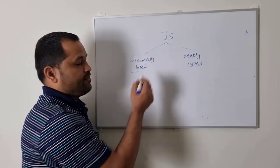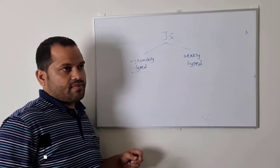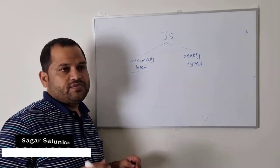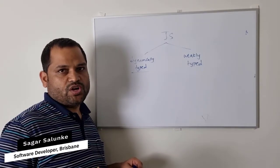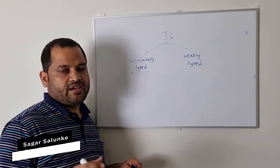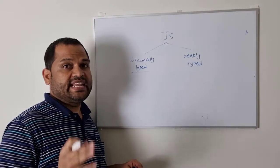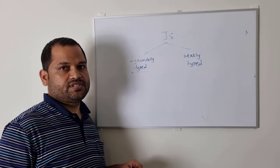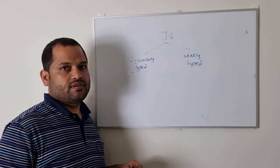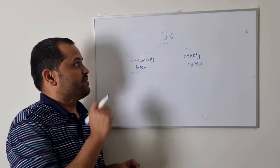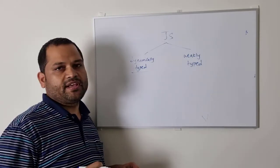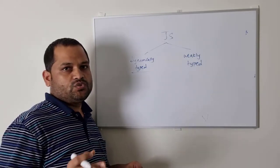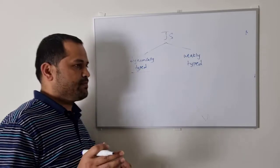Dynamically typed language — if you have worked with C, C++, or Java, those languages are statically typed languages. Unlike JavaScript, which is a dynamically typed language.